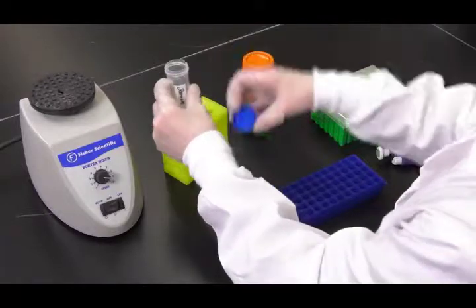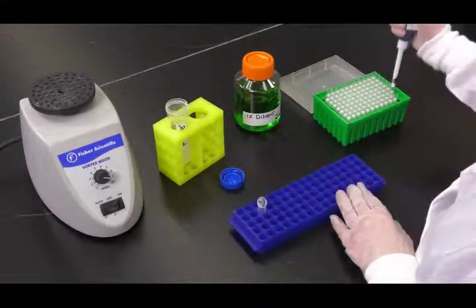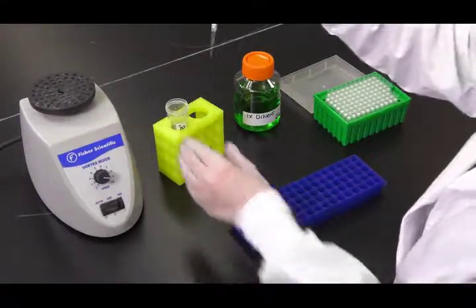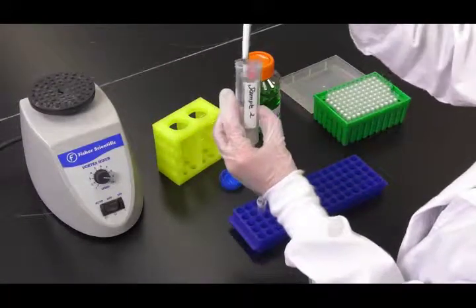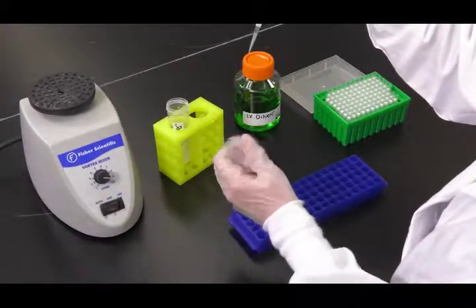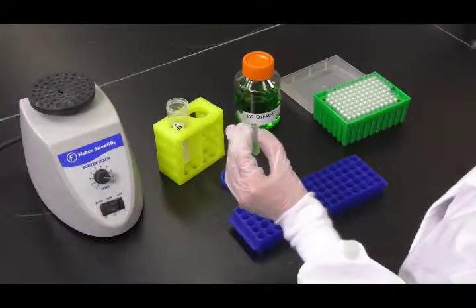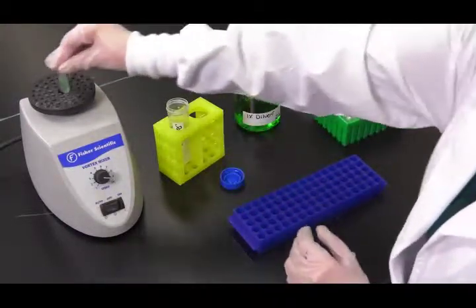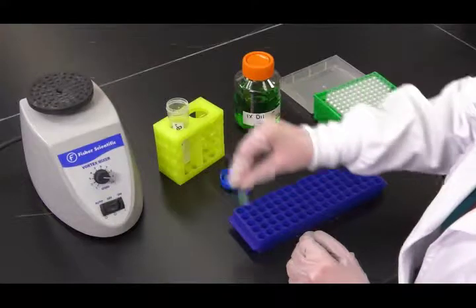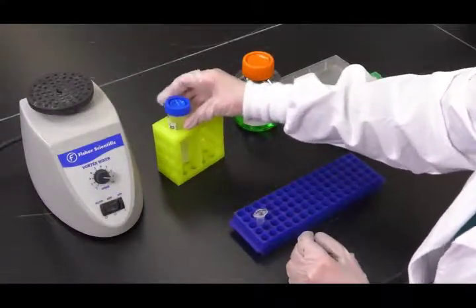After incubation, centrifuge the samples at 3000 XG for 20 to 30 seconds to pellet particulates or allow them to settle for 5 minutes in a test tube rack. Finally, collect 100 microliters from the middle aqueous layer and add it to 900 microliters of the 3M diluent solution and vortex or shake to mix well.